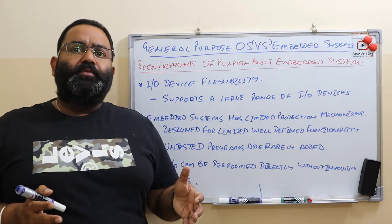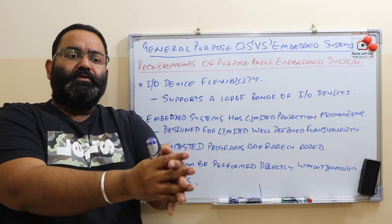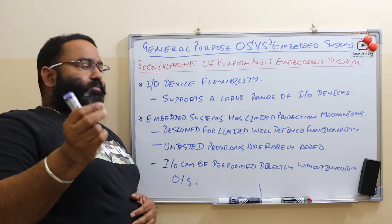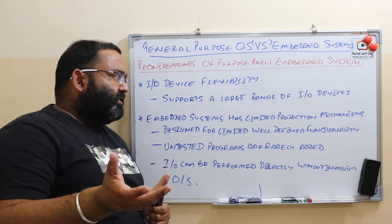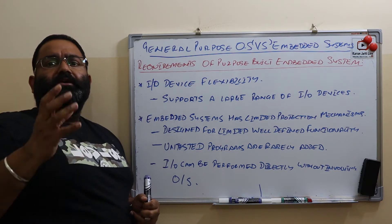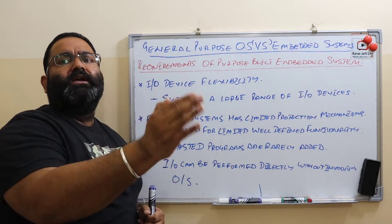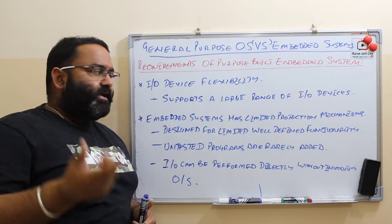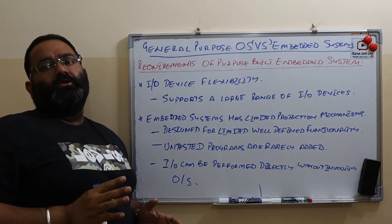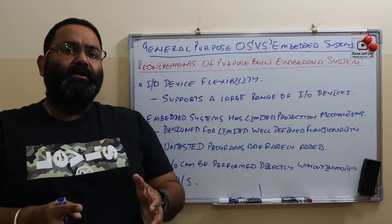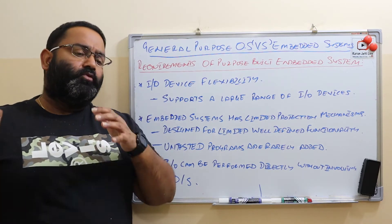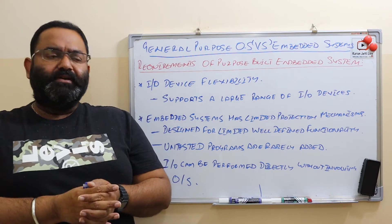Embedded systems have limited protection mechanisms. Unlike general purpose operating systems, where we divide instructions into privileged and semi-privileged categories, embedded systems have very limited protection mechanisms. This is because they are designed for limited and well-defined tasks. Programs installed on embedded systems are always highly tested, and untested programs are almost never installed on them.